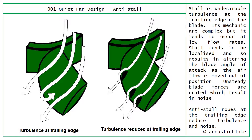Moving to air as it passes off the trailing edge of a fan blade, we can get something called stall — an undesirable turbulence at the trailing edge. It tends to occur at low flow rates, is localized, and results in altering the blade angle of attack so airflow moves out of position, creating unsteady blade forces and noise. Anti-stall knobs, visible in black on the right-hand image, help to even the flow over the trailing edge, reducing turbulence and thereby reducing noise.